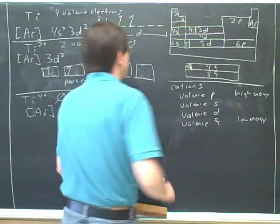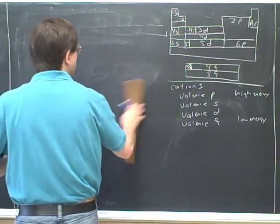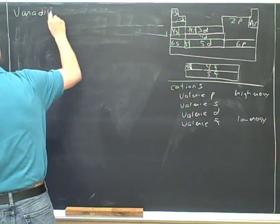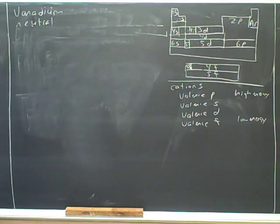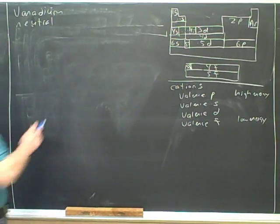So let's try the electron configuration for vanadium. Neutral vanadium. Let's try to write down what the electron configuration would be for neutral vanadium. Okay. Now, did you start by asking what was the total number of valence electrons? What's the total number of valence electrons that neutral vanadium has?